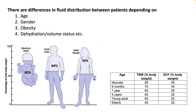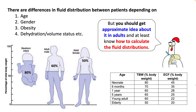Plasma is 60% while hematocrit is 40%, and this will change depending on the degree of anemia. There are differences in fluid distribution among patients depending on age, gender, obesity, dehydration, volume status, etc. My goal is to give you an approximate idea as an adult, since children are very different, and to help you understand how to calculate fluid distribution so you can extrapolate these principles to elderly patients and sometimes neonates as well.